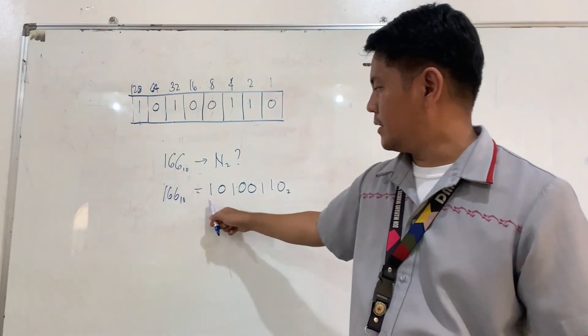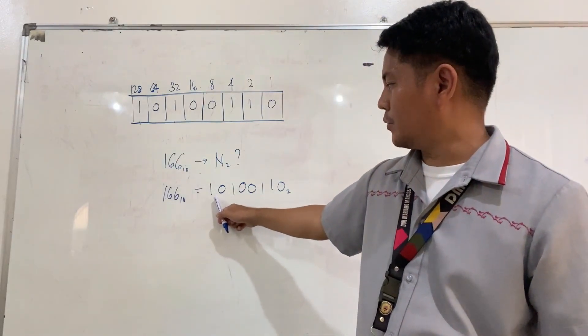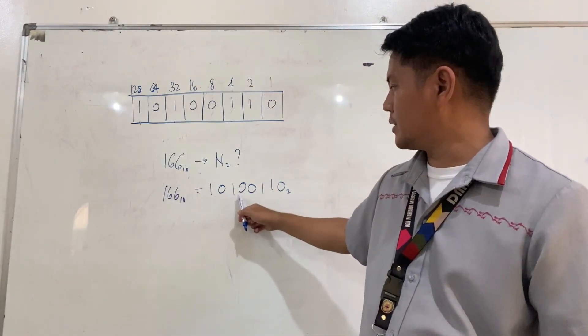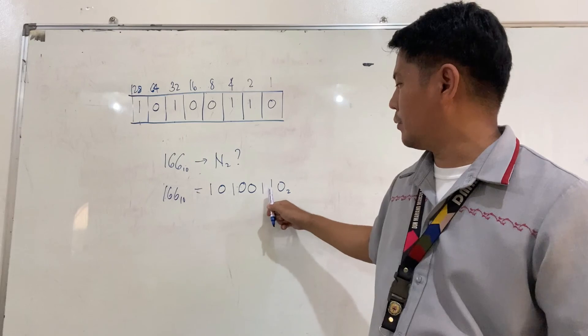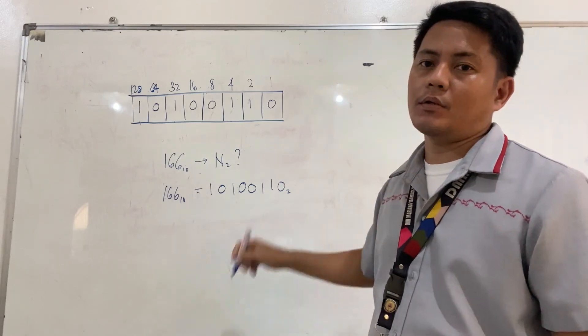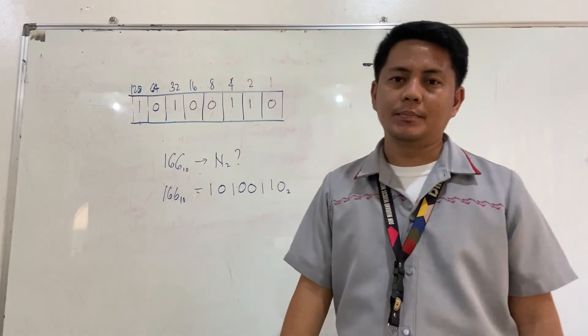So, 166 base 10 is equivalent to 10100110 base 2. Thank you.